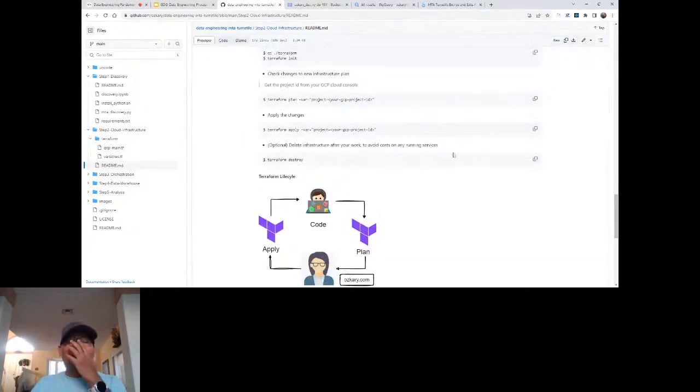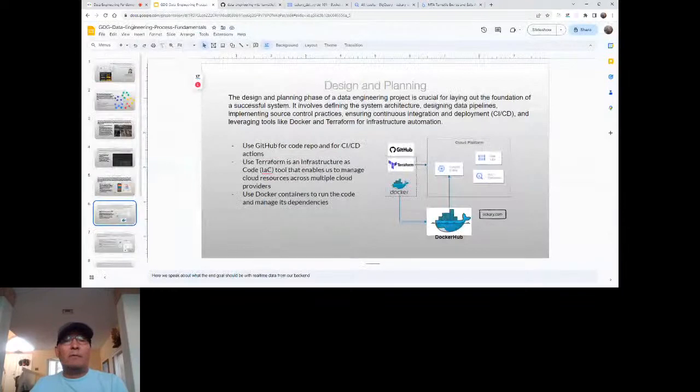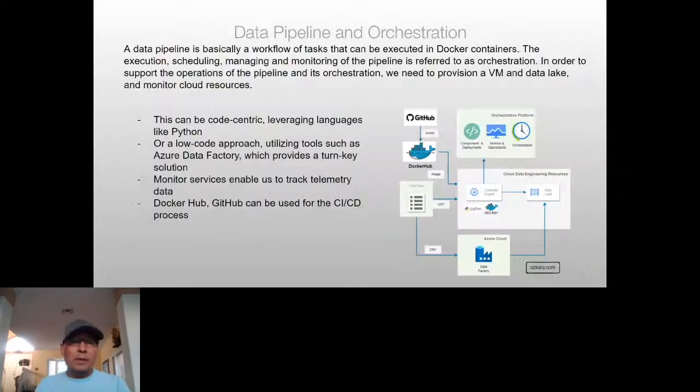After building out the resources and setting up the infrastructure, we move into the implementation effort for our pipelines. Now we are in the data pipeline and orchestration phase. We've used Terraform to build our VM and data lake, so now we need to think about how to build out our pipeline. A pipeline is really a workflow that executes a few tasks to accomplish a specific unit of work. Pipelines can be executed in Docker containers to isolate dependencies.